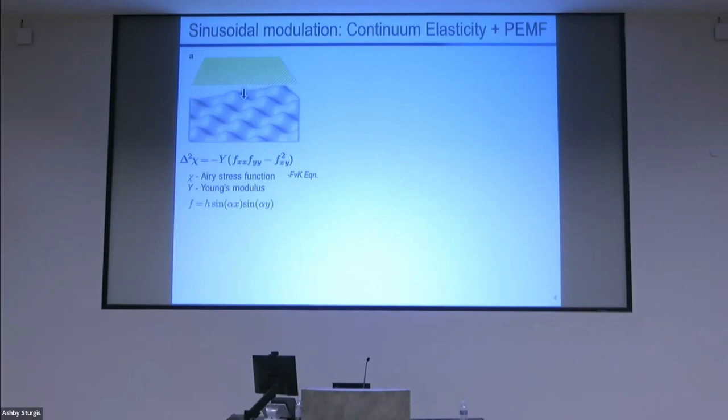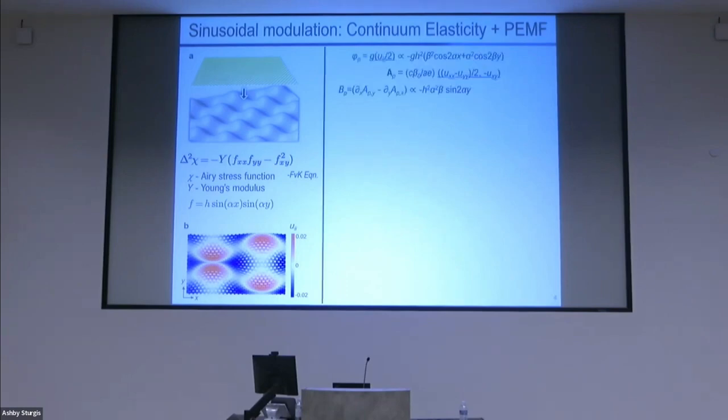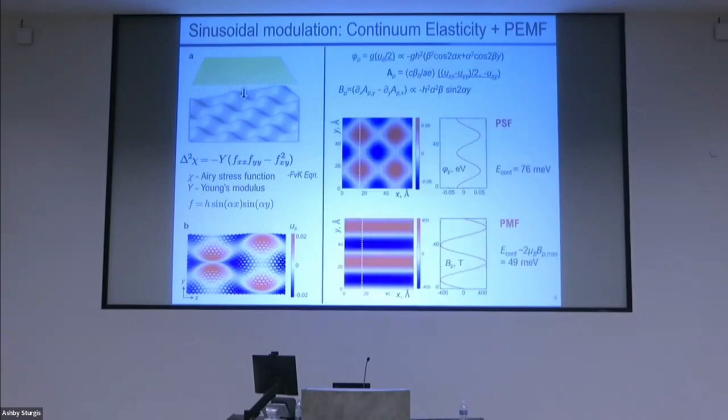We use continuum elasticity in combination with the strain fields and the displacement fields, and using this we relax the structure. This is the relaxed structure - the crest is compressed and the saddle point is slightly stretched. Since the shape is analytical, one can analytically calculate what will be the pseudo-electric field and pseudo-magnetic field. This is the plot of pseudo-electric field and magnetic field as a function of x and y.